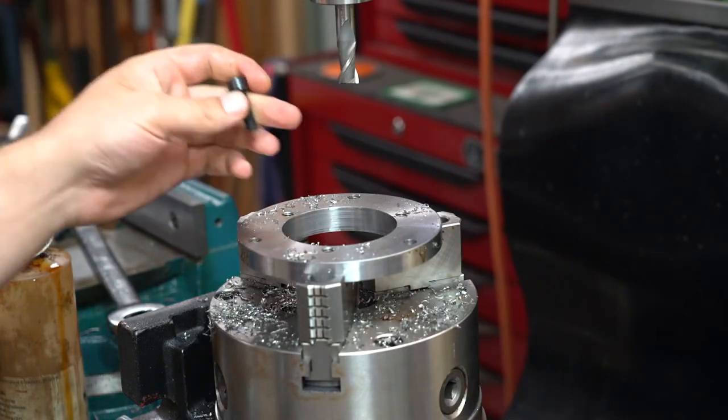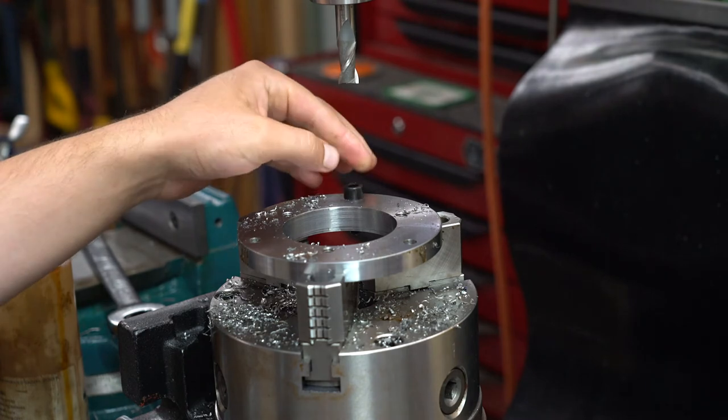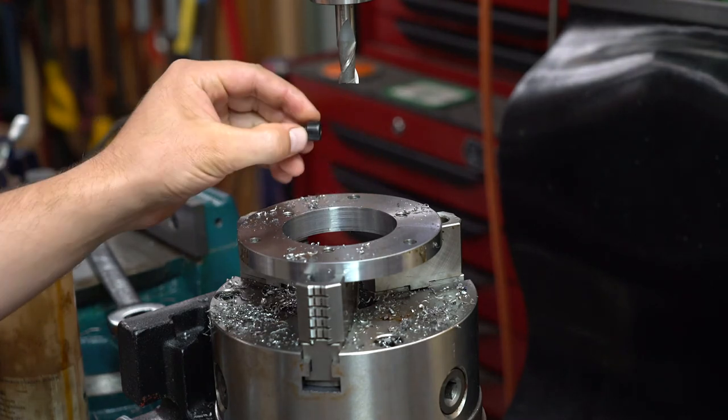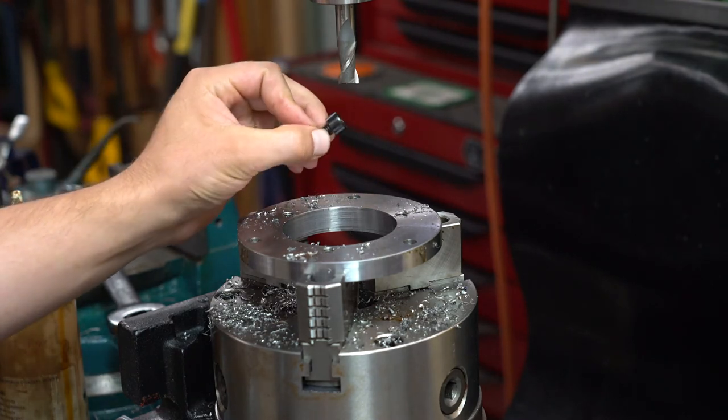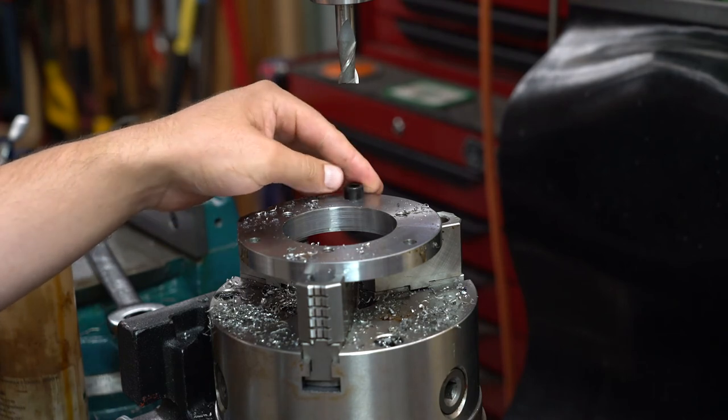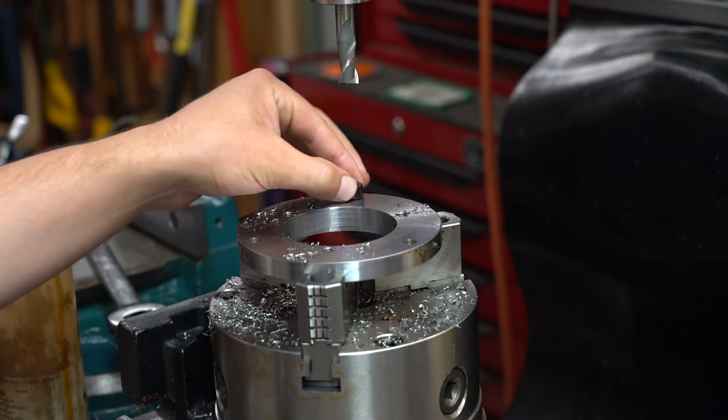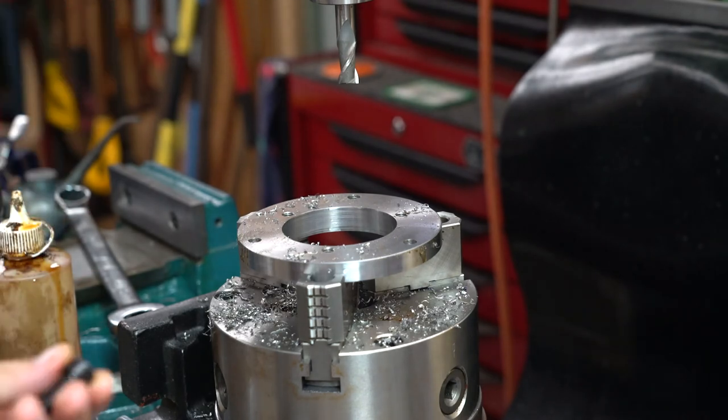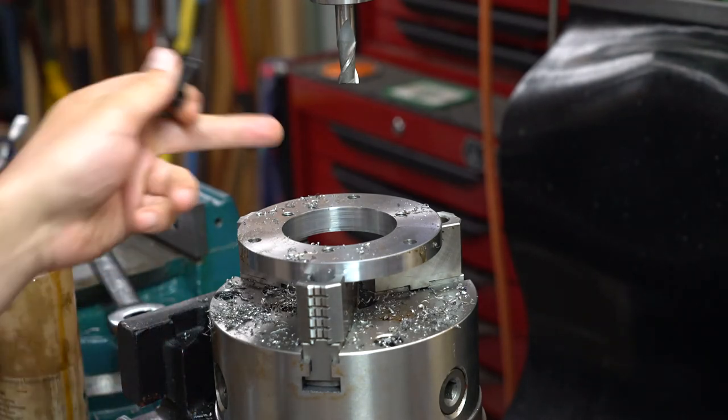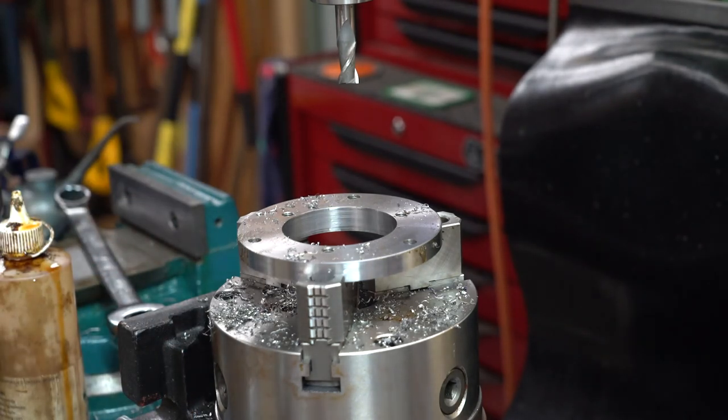So now that I've drilled the holes for the bolts, I just need to machine for the heads to be recessed. So I've set the depth on the mill quill and I'm just going to do that.